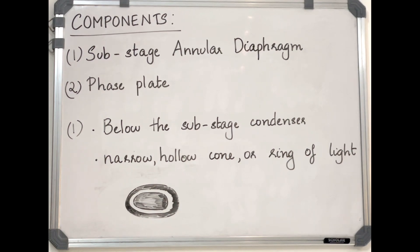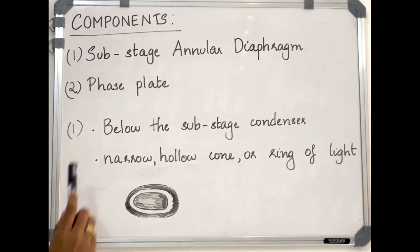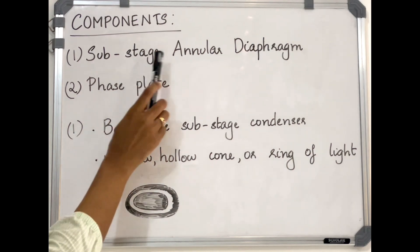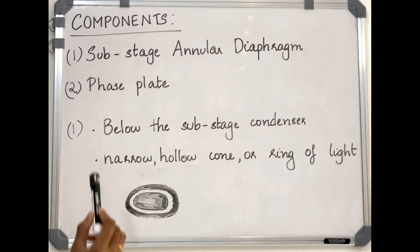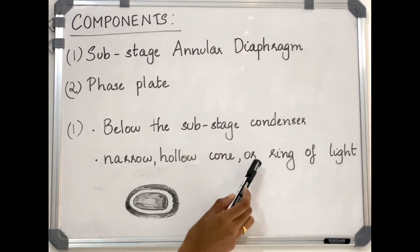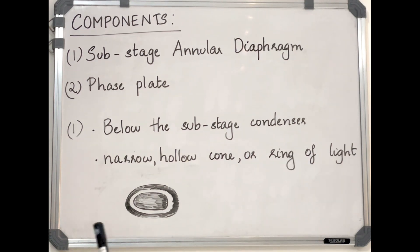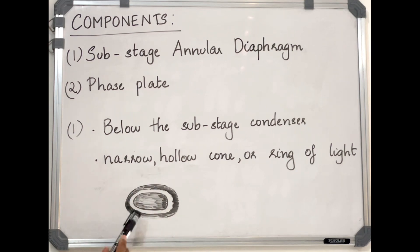Components of the phase contrast microscope: it is similar to an ordinary compound microscope, having a light source, condenser lens, objective lens, and ocular lens. But there are two additional components — the sub-stage annular diaphragm and the phase plate. The sub-stage annular diaphragm, also called the annular ring, is located below the sub-stage condenser and helps create a narrow hollow cone or ring of light.